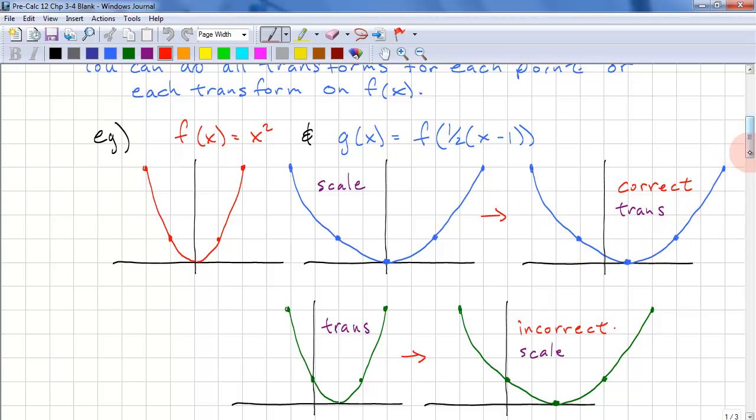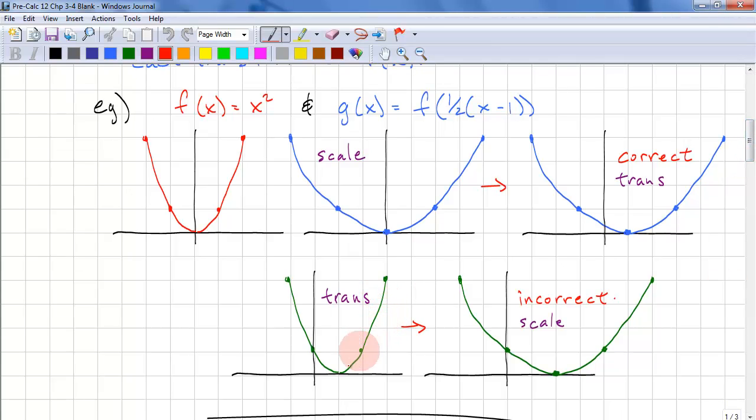Now if we translate this first, so we move the whole graph right 1 for x². And now we scale. Well, we don't scale the 0 point because 0 divided by half is still 0. We look at 2. 2 divided by half is 4. We look at this point. Negative 1 divided by half is negative 2. And 3 divided by half is 6. You can see that these two graphs are different. So order is important.